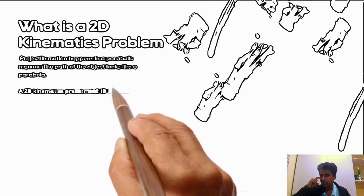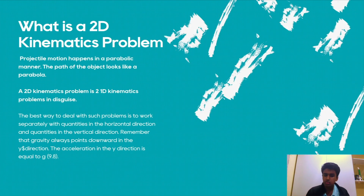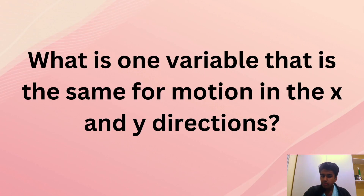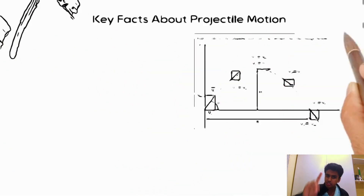Now let's move on to 2D kinematics. 2D kinematics is basically two 1D kinematics problems, so you're solving two problems at once. One important tip is to solve for the x direction and y direction separately, because the motion in the x direction is independent of the motion in the y direction. For example, if there's acceleration in the y direction, that won't affect the x direction. One variable that is the same for both directions is time, so finding time can be extremely useful.